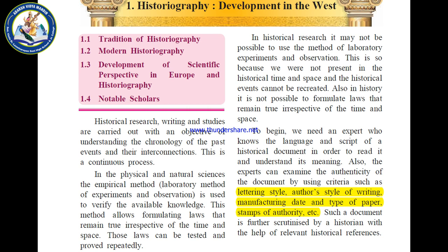Since we were not present at that time and space, we cannot observe historical events. Furthermore, historical events cannot be recreated or repeated — unlike scientific experiments, which can be repeated. Also, in history it is not possible to formulate laws as we can in natural or physical science.